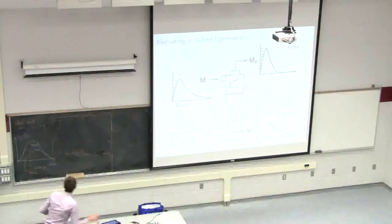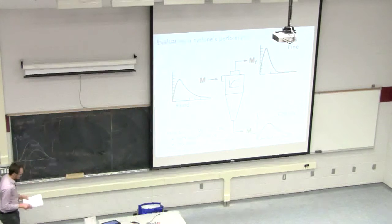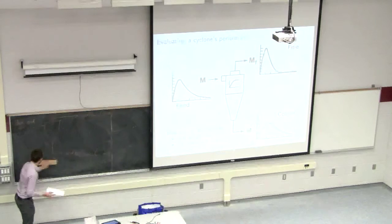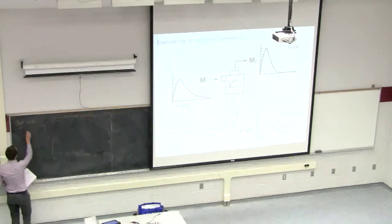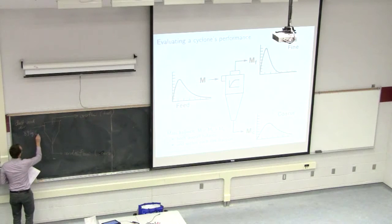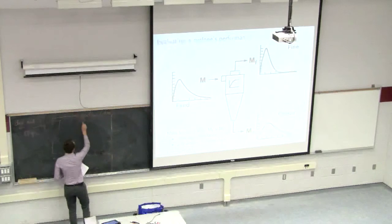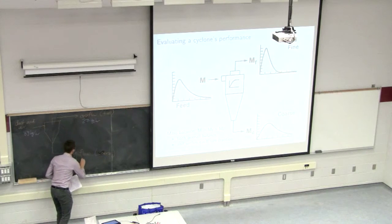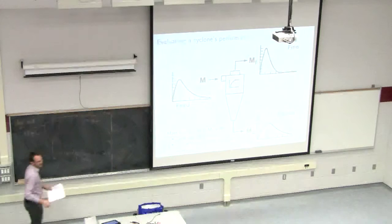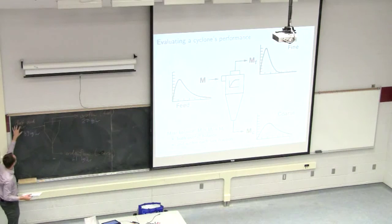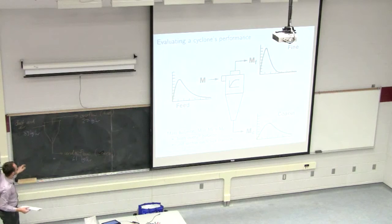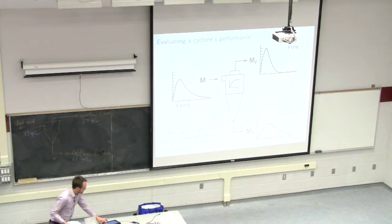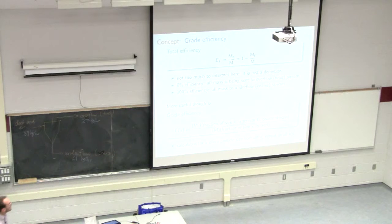Last class we put some numbers on this example. The feed was 88 kilograms per hour. The fines were 27 kilograms per hour, and from a mass balance the coarse stream is the leftover 61 kilograms per hour — so we see most of our solids there. These are the solids' flows, not the dust plus air mixture — 88 kilos in the feed, 27 and 61 in the overflow and underflow.